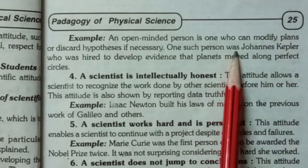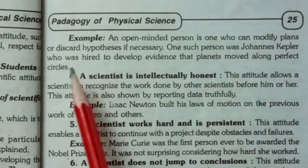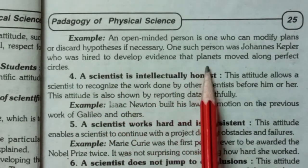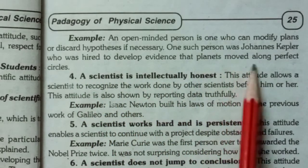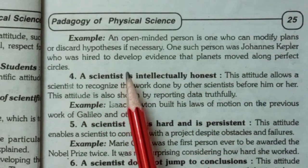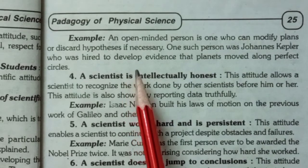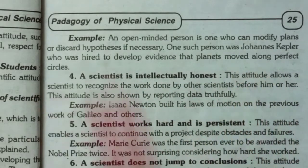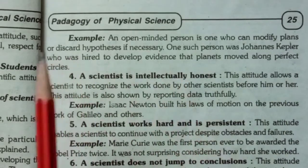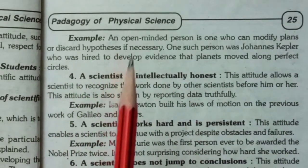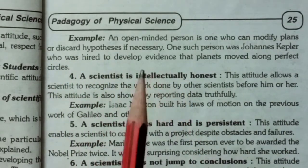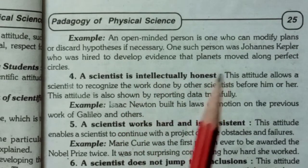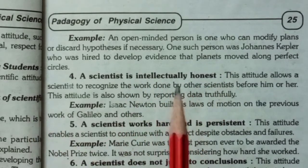One such person was Johannes Kepler, who was hired to develop evidence that planets moved along perfect circles. Sometimes you need to be open-minded so that you can modify your plans, discard them, or say that a hypothesis does not agree and try again.